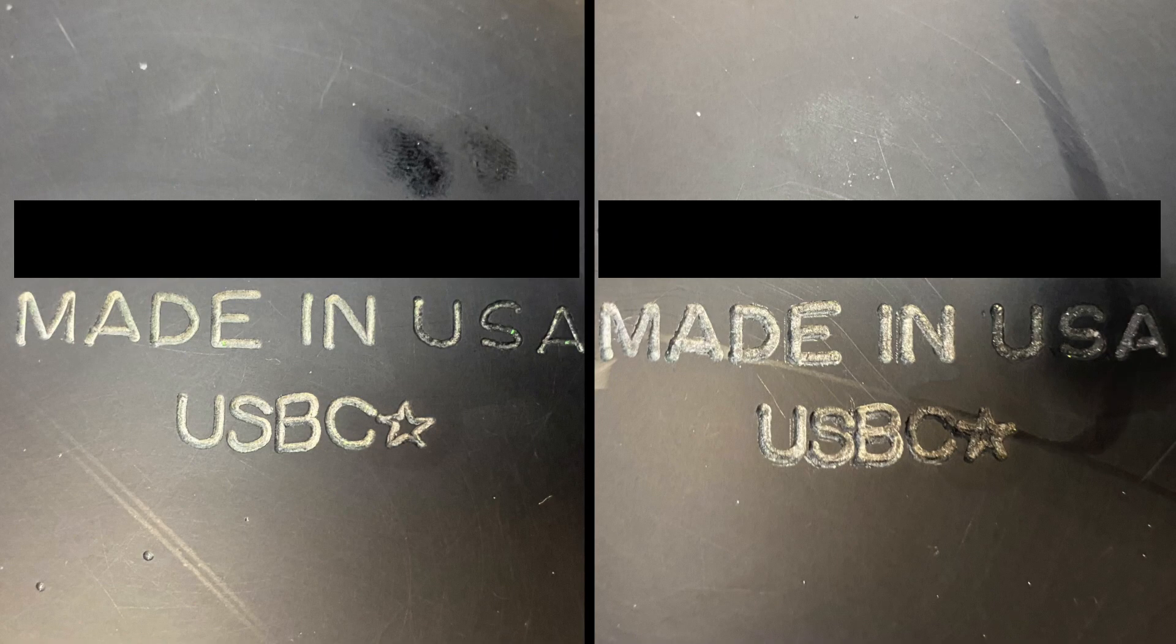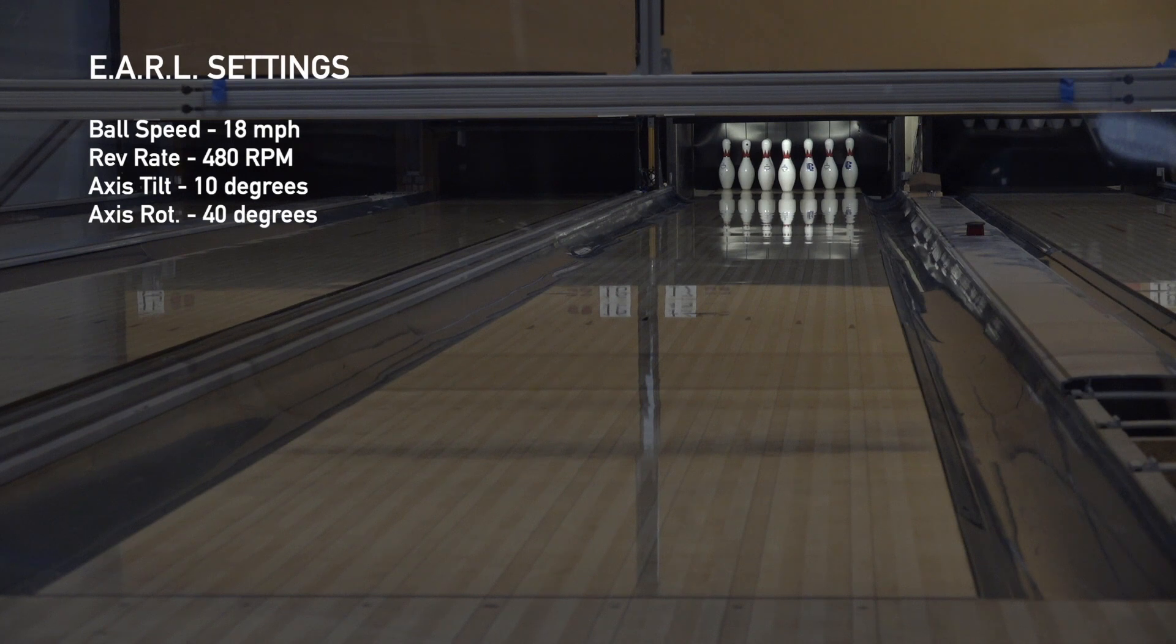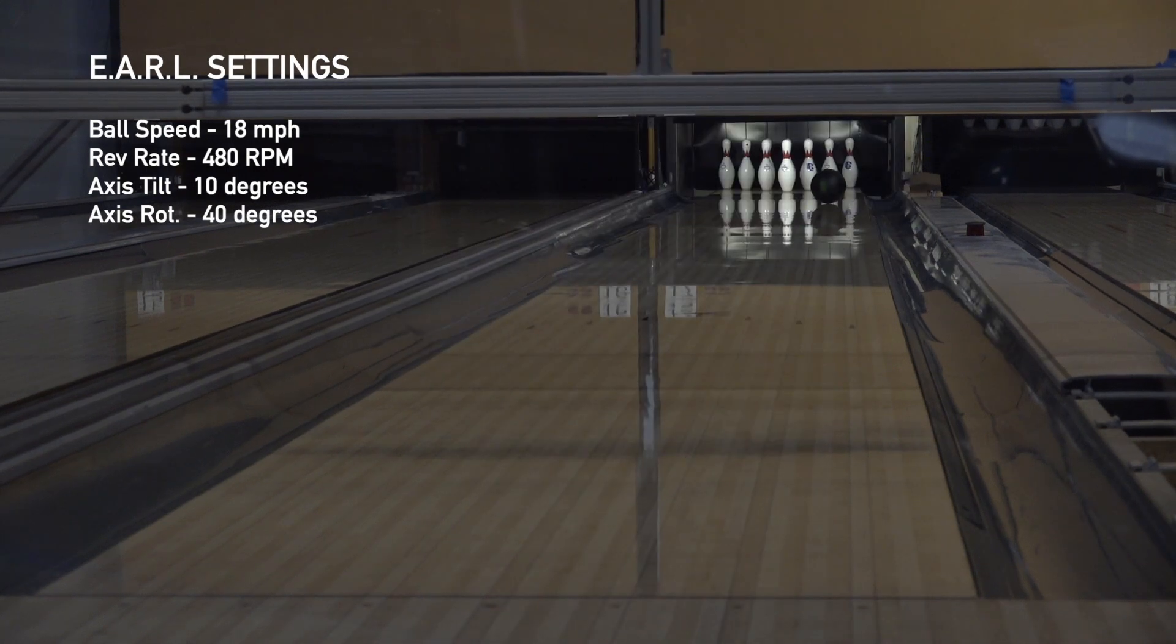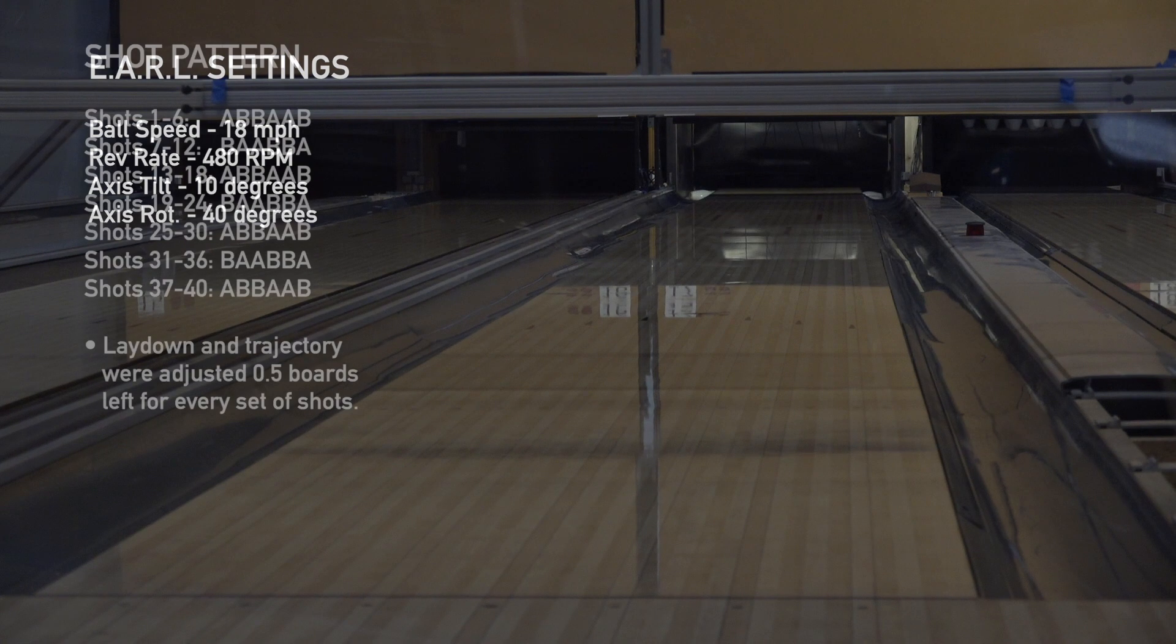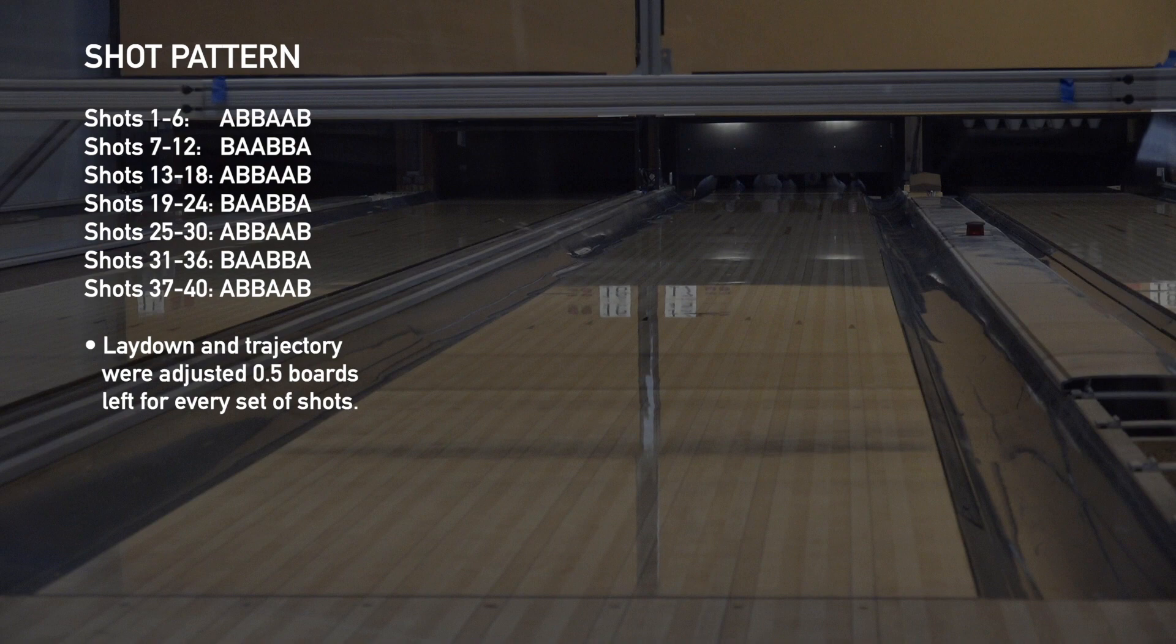For the second test, USBC looked at two otherwise identical urethane balls of the same model, but with very different hardness readings out of the box. The first ball measured 78.6 and the second 73.4. Earl's testing parameters remain the same for this test as they were for test 1. But for this test, Earl threw 7 series of 6 shots in an A-B-B-A-A-B fashion.